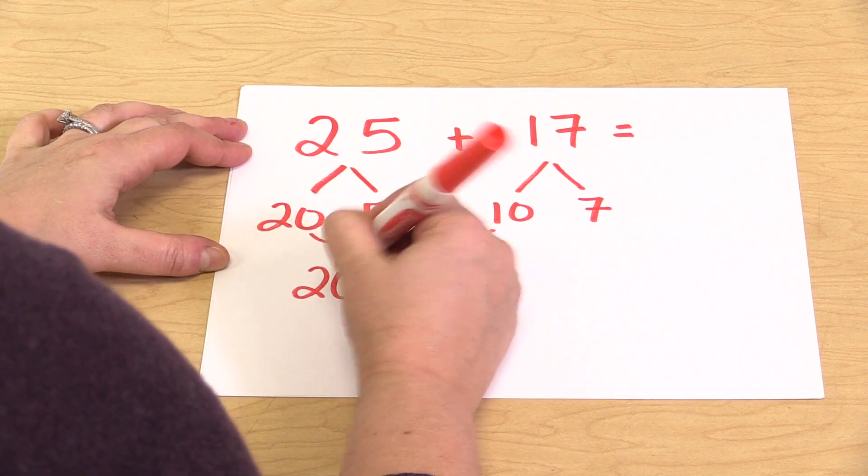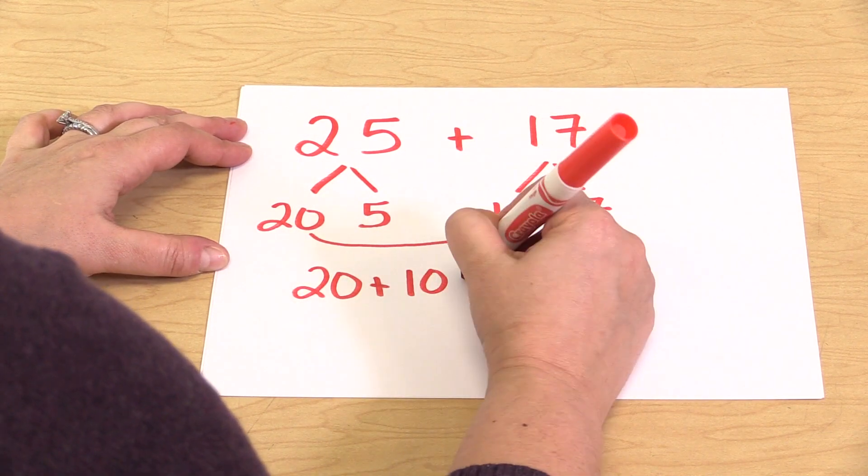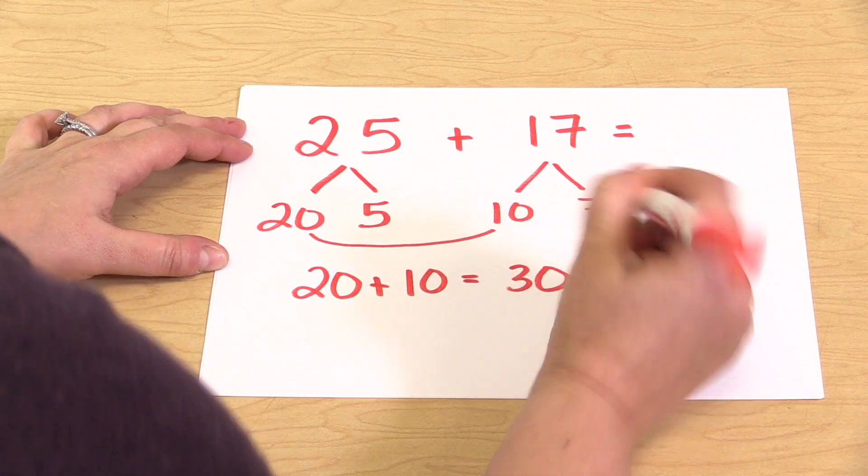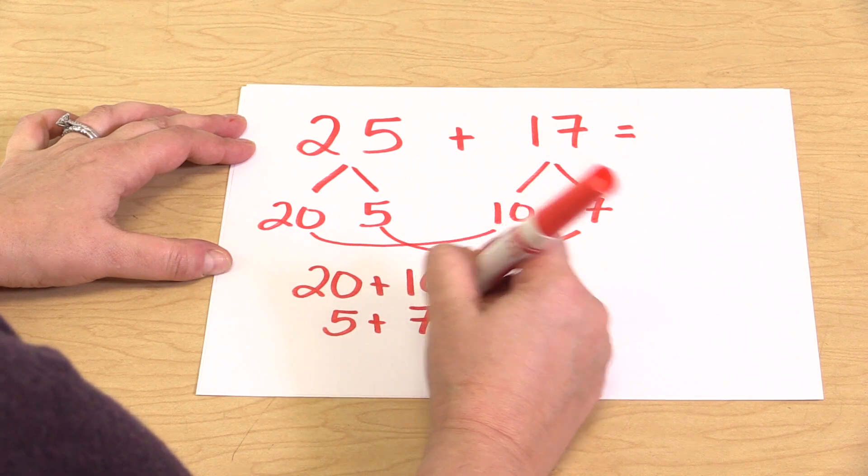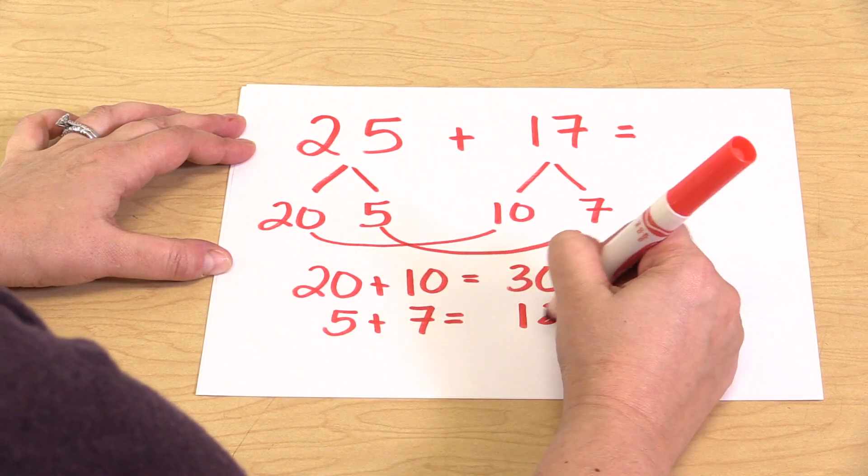So we would add 20 plus 10 equals 30, and then we would group together our ones. So 5 plus 7 equals 12.